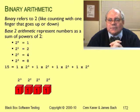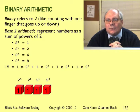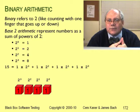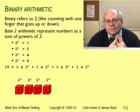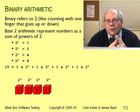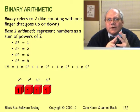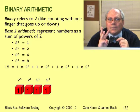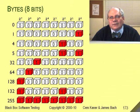Here we see the decimal number 15 represented in binary. It's 1 times 2 to the 3, plus 1 times 2 to the 2, plus 1 times 2 to the 1, plus 1 times 2 to the 0. Decimal 15 is the same as binary 1111. This slide shows a bunch of other binary conversions — for example, decimal 132 is binary 10000100.